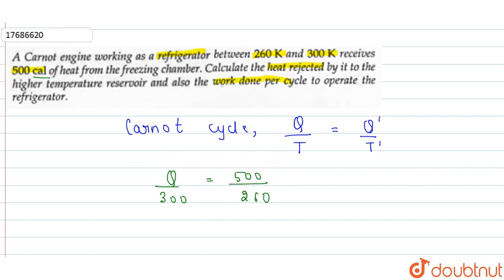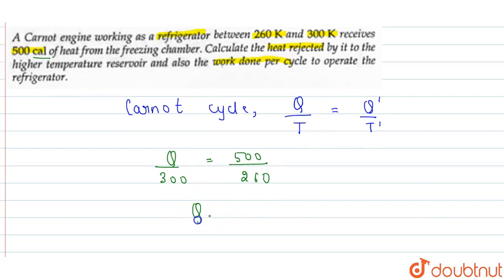Now we calculate Q. Q equals 500 times 300 divided by 260. Simplifying this, we get 577 calories.